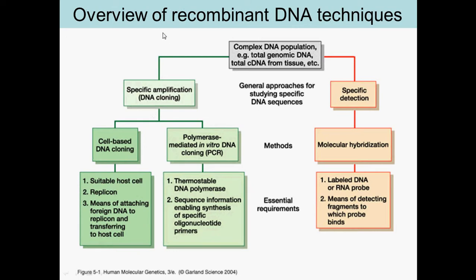An overview of recombinant DNA techniques: starting with total genomic DNA, if you want specific cloning you can use a thermostable DNA polymerase (Taq polymerase) for PCR, which provides sequencing information and labeling, along with synthesis of specific oligonucleotide primers. The amplified DNA can then be transferred into a cell such as E. coli with the help of a virus. This will be discussed more in the next lecture. You can also use an RNA probe to detect RNA.